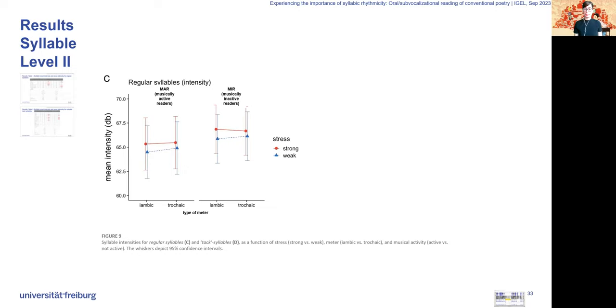For intensity, for the regular syllables, we found that strong syllables were read louder than the weak, which is also to expect. That's red line and blue line again. And more so in the iambic version. Musically active readers overall read a little less intense in iambic than in a trochaic poem.